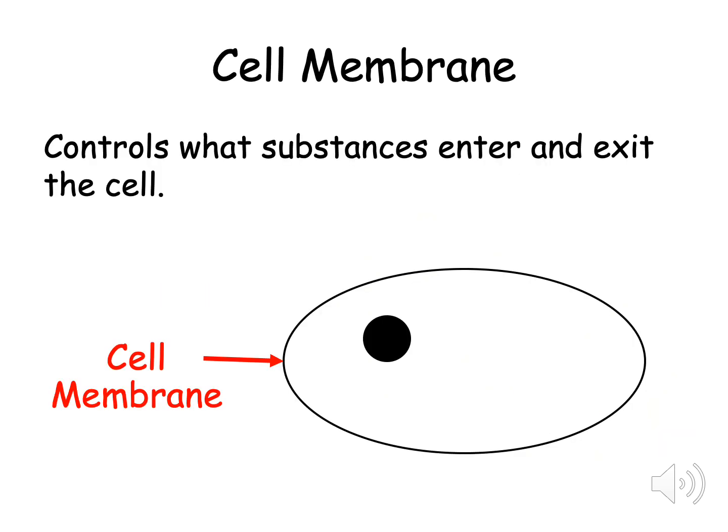The cell membrane controls what substances enter and exit the cell. It is a selectively permeable membrane which means it only allows specific molecules through the membrane. These are usually small molecules like oxygen and water. The cell membrane is represented by a line around the outside of the cell.